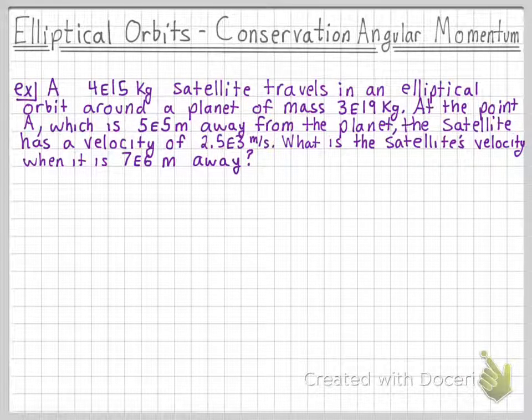Let's do an example with this idea. A 4 times 10 to the 15 kilogram satellite travels in an elliptical orbit around a planet of mass 3 times 10 to the 19th kilograms. At point A, which is 5 times 10 to the 5 meters away from the planet, the satellite has a velocity of 2.5 times 10 to the 3rd meters per second. We want to know what the satellite's velocity is when it is 7 times 10 to the 6 meters away.